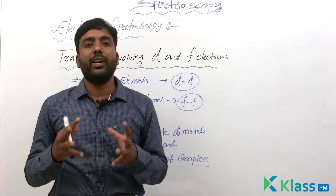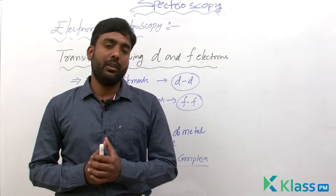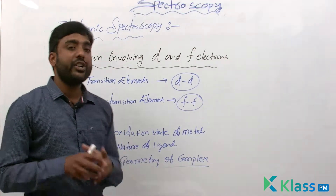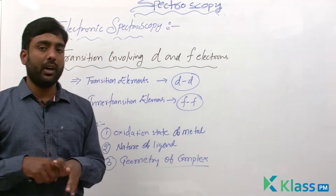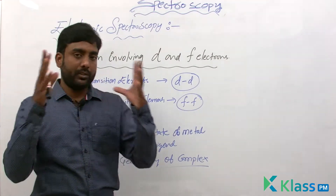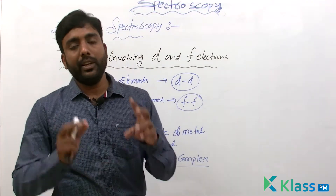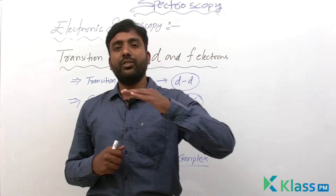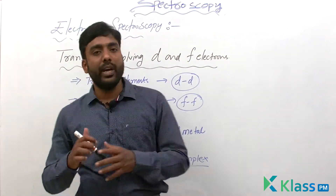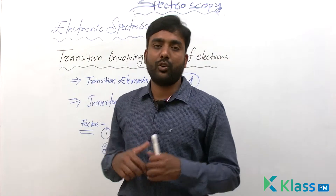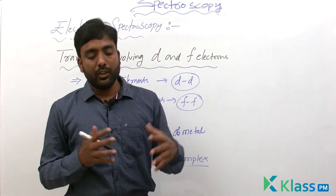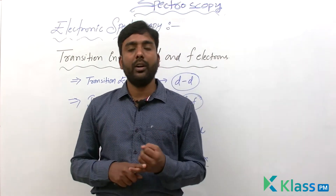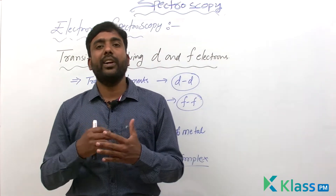The three factors that influence the energy states in complexes involving d-to-d and f-to-f transitions are: first, the oxidation state of the metal; second, the nature of the ligand; and third, the geometry of the complex, that is the shape of the complex.